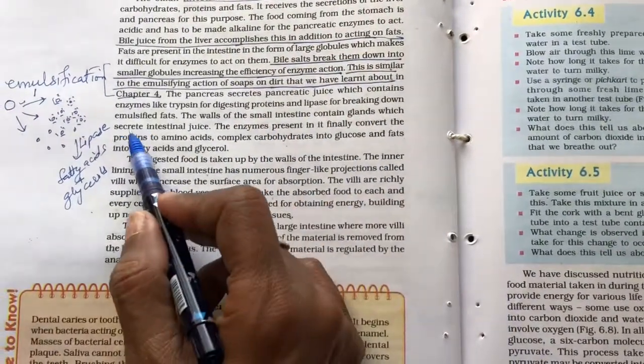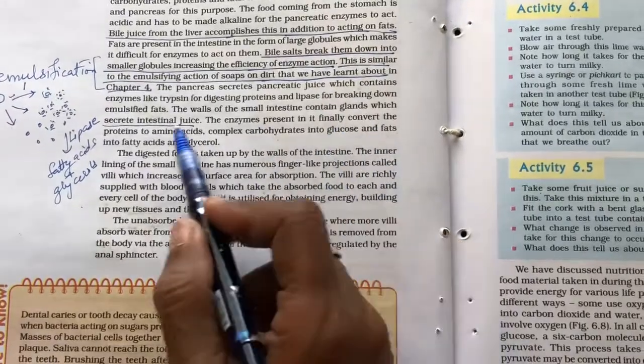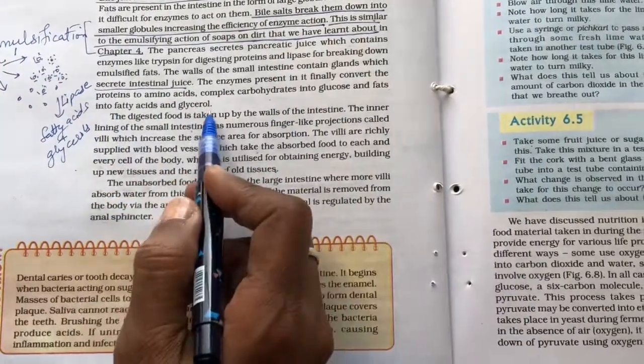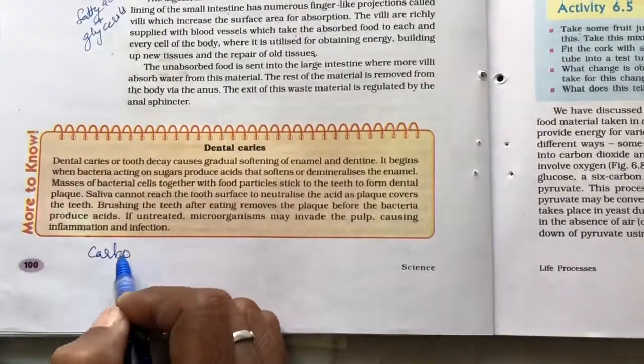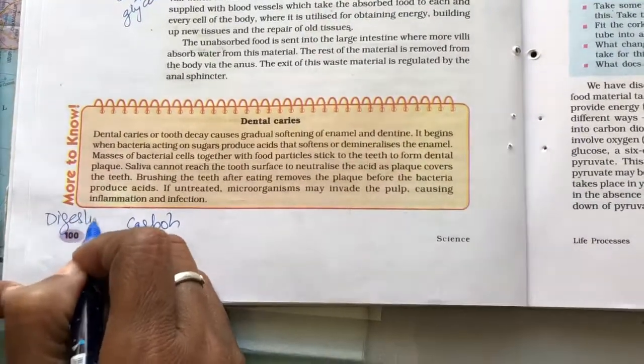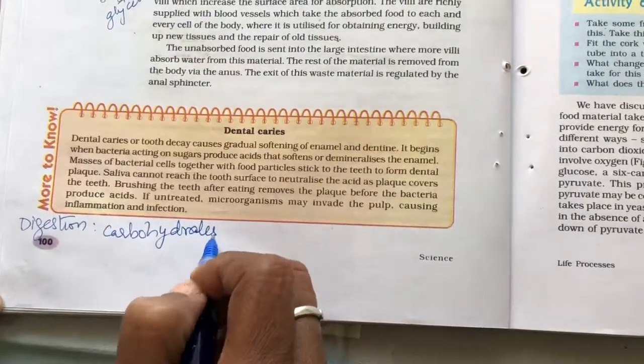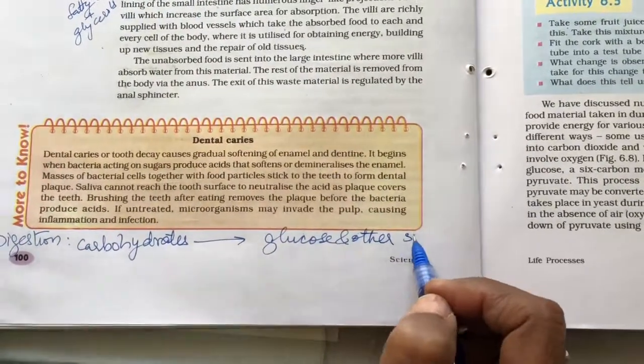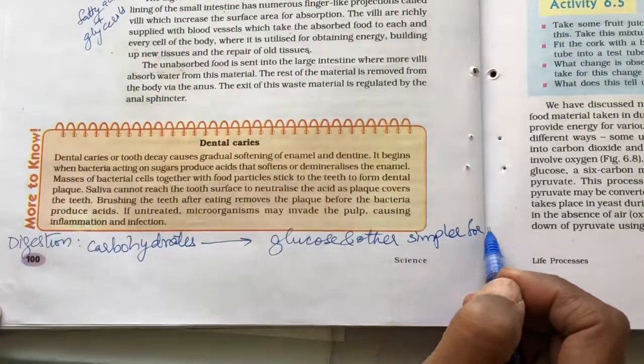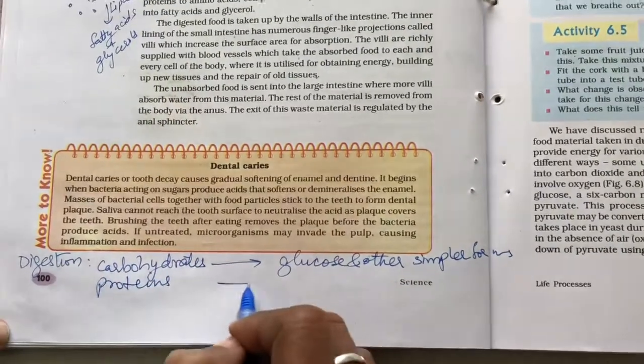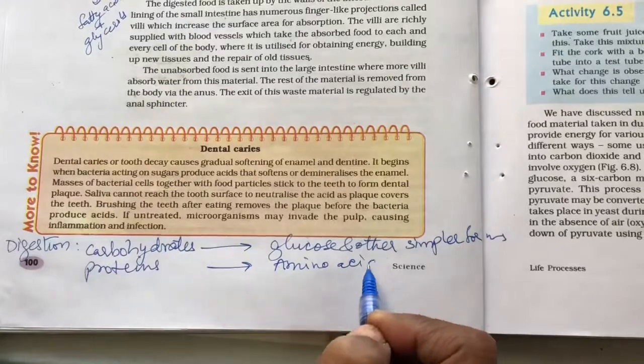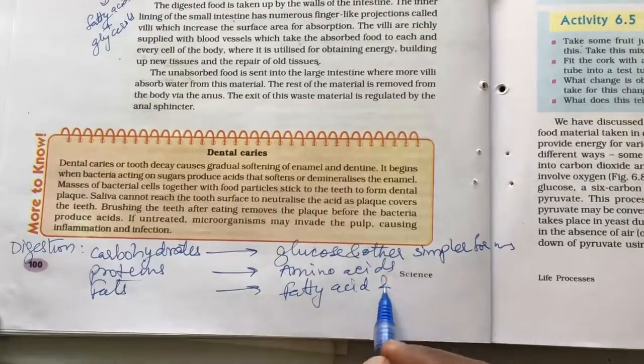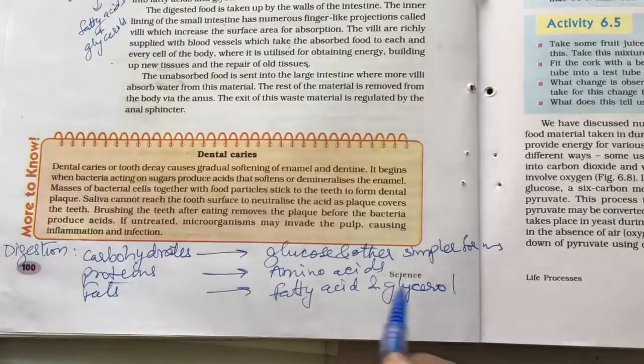The walls of small intestine contain glands which secrete intestinal juice. The enzymes present in it finally convert the proteins into amino acids, complex carbohydrates into glucose and fats into fatty acids and glycerol. So, finally what is happening is all the carbohydrates, they are converted into glucose and other simpler forms, proteins into amino acids and fats into fatty acids and glycerol. And this what we say is digestion is completed.